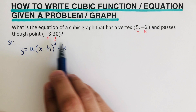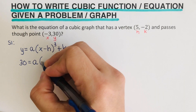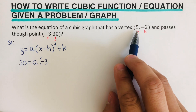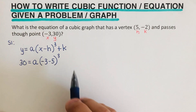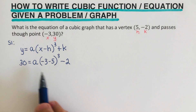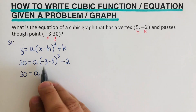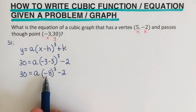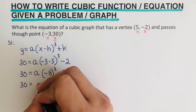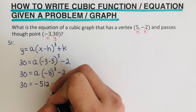Our Y is 30, so I'm going to write 30 here equals A, and then our X is negative 3 and our H is 5, so there's going to be a minus 5, and then cubed plus K, and our K is negative 2. So then we are going to solve for A. That's going to be 30 equals A times negative 8 cubed minus 2. Simplifying, negative 8 times negative 8 times negative 8 is negative 512 A minus 2.